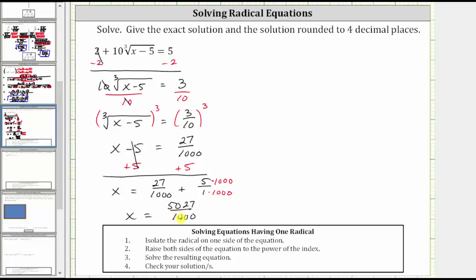So this is the exact solution written as an improper fraction. We're also told to express the answer rounded to four decimal places. 5027 divided by 1000 is exactly 5.027. The directions say rounded to four decimal places, but notice the decimal terminates after three decimal places, so we're able to give the exact value in decimal form. This won't always be the case, so if the decimal does not terminate, we would round to four decimal places.